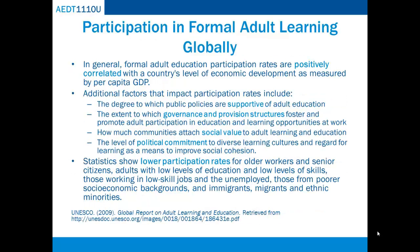Information from UNESCO's national reports and regional synthesis reports has revealed that, in general, formal adult education participation rates are positively correlated with a country's level of economic development as measured by per capita GDP. On average, the more prosperous the country, the higher the adult learning participation rate. Additional factors that impact participation rates include supportive public policies, governance and provision structures that foster adult participation, how much communities attach social value to adult learning, and the level of political commitment to diverse learning cultures and regard for learning as a means to improve social cohesion.